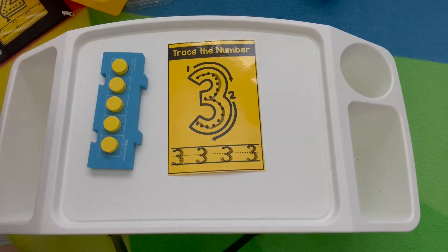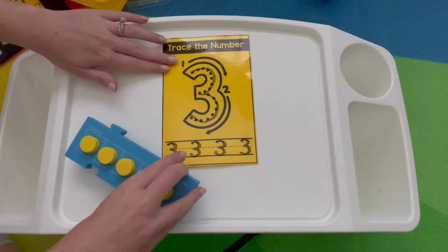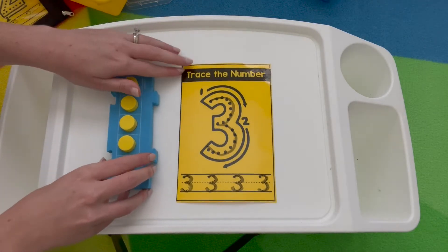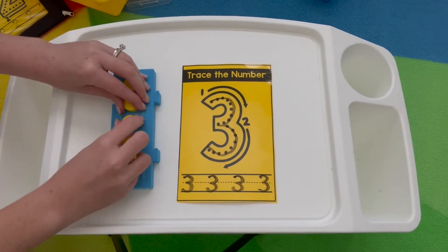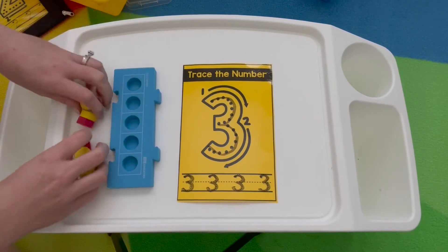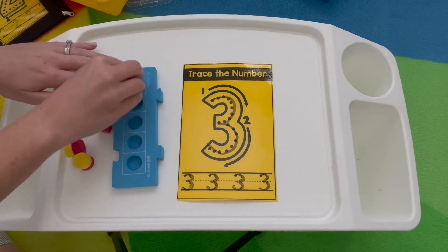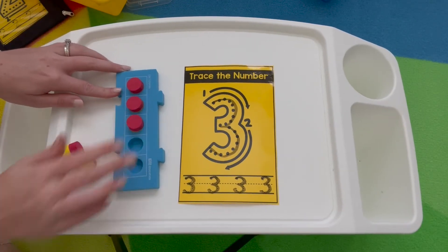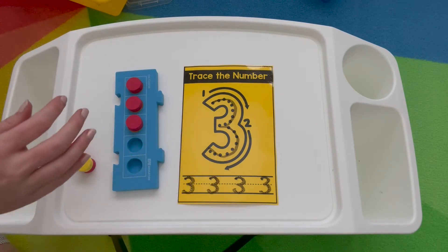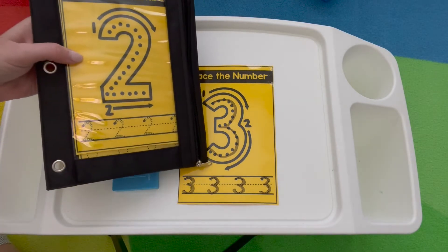Once they've traced all their numbers they're going to go ahead and build it on their five frame. So three: one, two, three, or they could start with them all off and just go ahead and build it that way. One, two, three. They'll erase their tracing card and grab out their next one once they're ready.